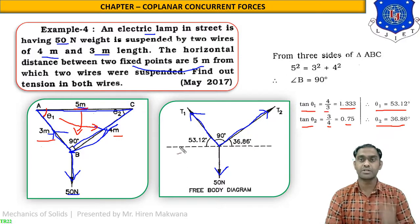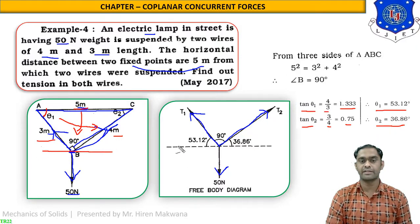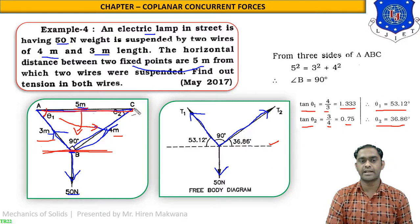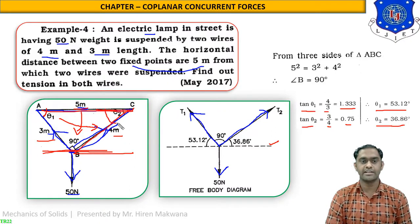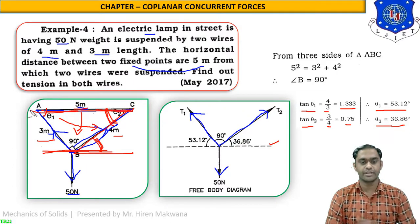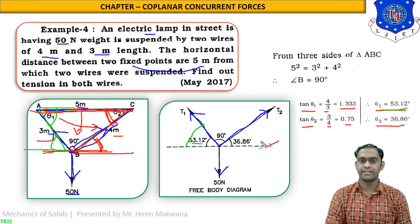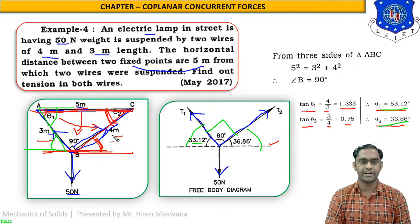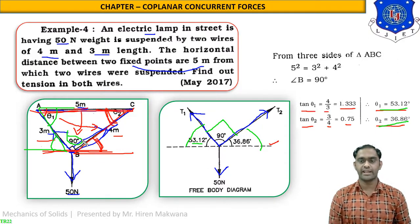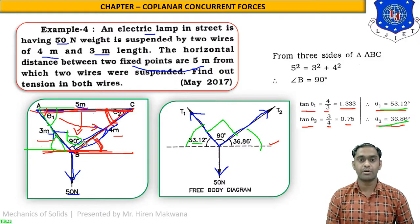Now how are the angles positioned at point B? Using the shortcut method: draw a horizontal dotted line at point B. The ceiling is parallel to this line, so by alternate angles and Z formation between two parallel lines, the angle on one side is θ2 = 36.86° and on the other side is θ1 = 53.12°. The middle angle between T1 and T2 is 90 degrees. So all angles are now ready.